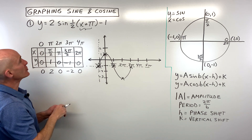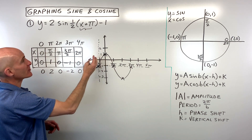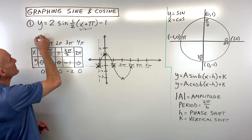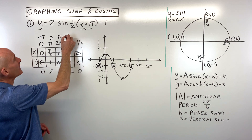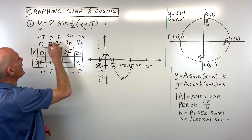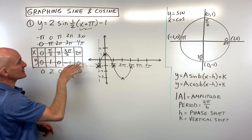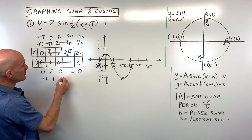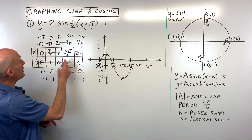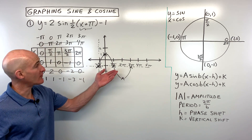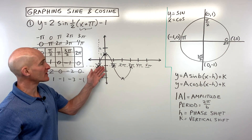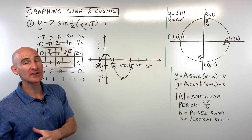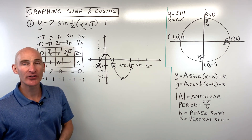Another way to do this is to continue working with the table. The plus π is shifting everything left π, so you subtract π from each of the x-values, giving negative π, 0, π, 2π, 3π. Then the minus one is shifting it down one, so you subtract one from all the y-values. Then you graph those final points without worrying about the shifted origin. Some people prefer this approach — either way gives you the same graph.